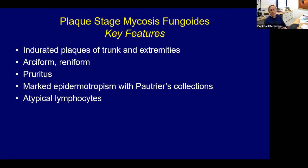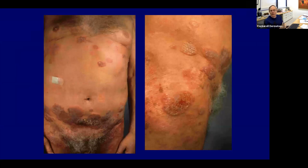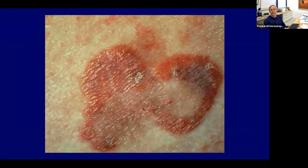When mycosis fungoides hangs around longer, it starts getting thicker and you start getting plaques. It progresses from patches to plaques to nodules and tumors. Sometimes it goes from patches to erythroderma — total body involvement. It doesn't always go through the patch-plaque-nodule-tumor stage. It can be a dynamic disease with either slow or fast progression. In the plaque stage, you get more induration, the lesions get thicker. That reniform, arciform pattern is very characteristic of mycosis fungoides.